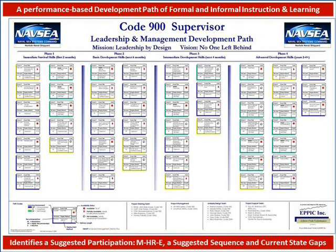A performance-based development path includes both formal and informal instruction and learning. In this particular path, there were also qualification and certification testing that happened to certify performance competence of the target audience. This path identifies a suggested participation — mandatory, highly recommended, or elected — in a suggested sequence, and also identifies the current state gaps, total gaps, and partial gaps.